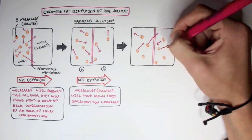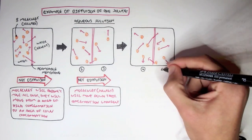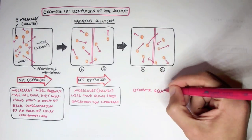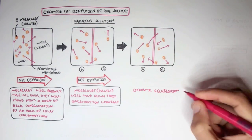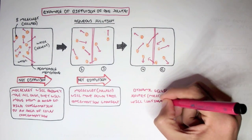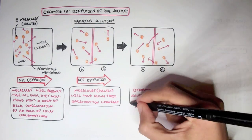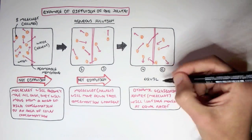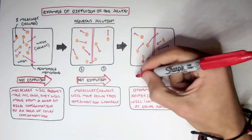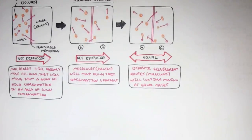After some time, these molecules will keep randomly moving but will reach dynamic equilibrium — the solutes continue moving at an equal rate, with a balanced amount on either side. This is essentially what diffusion does.